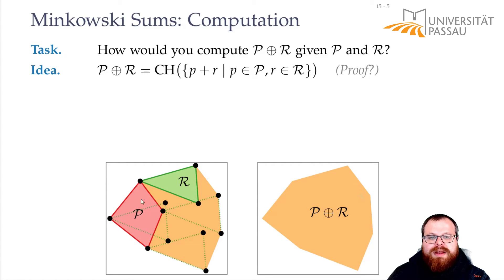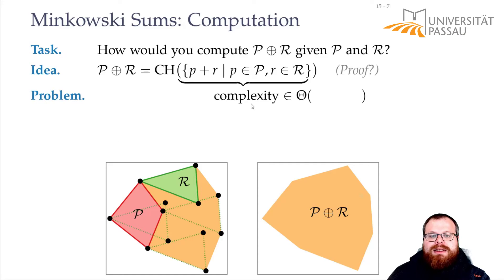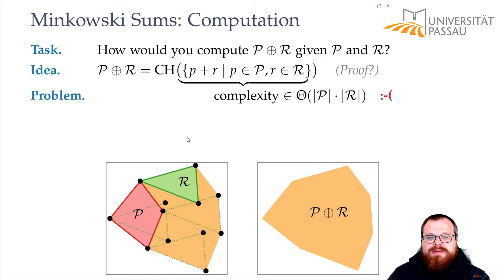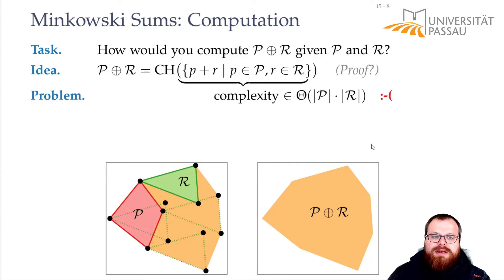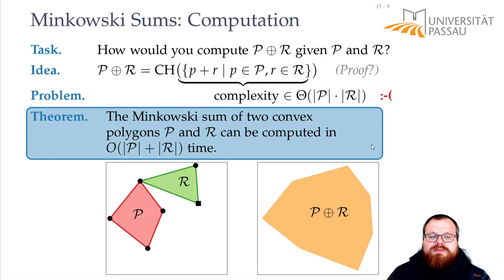So this is already an algorithm that we have. The problem with this is that the complexity to compute it is quadratic — that is, the number of points in P multiplied by the number of points in R, because we have to compute the vector sum for all pairs of them. But we know that the complexity of the Minkowski sum is order of P plus R. And we can have a better algorithm that computes it in exactly this time, equal to the complexity of the sum.